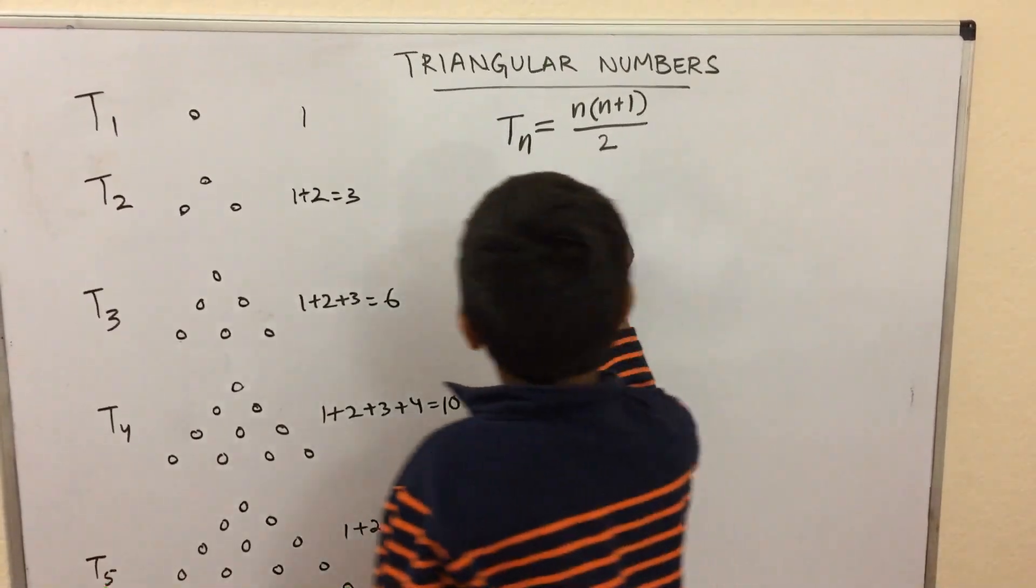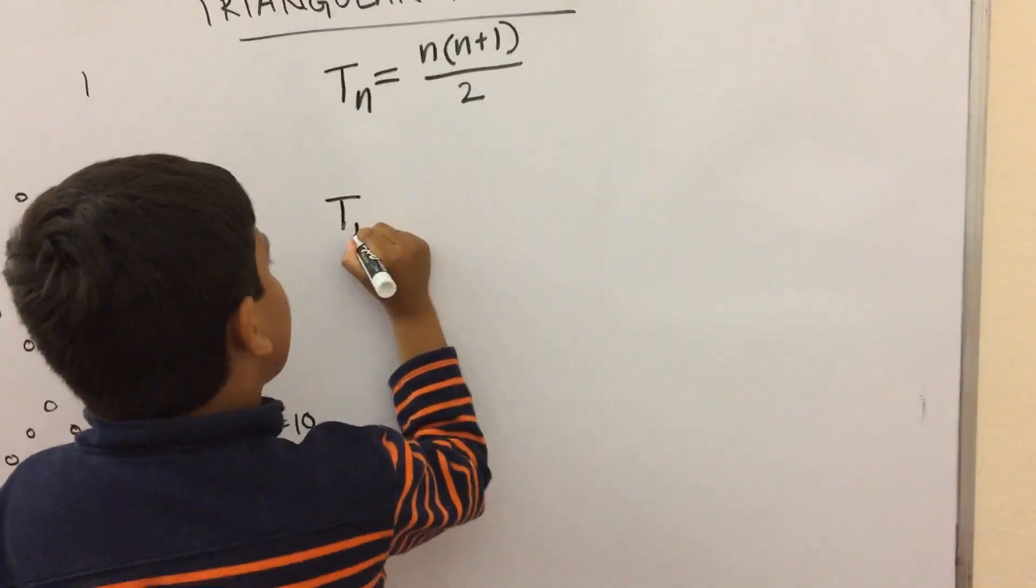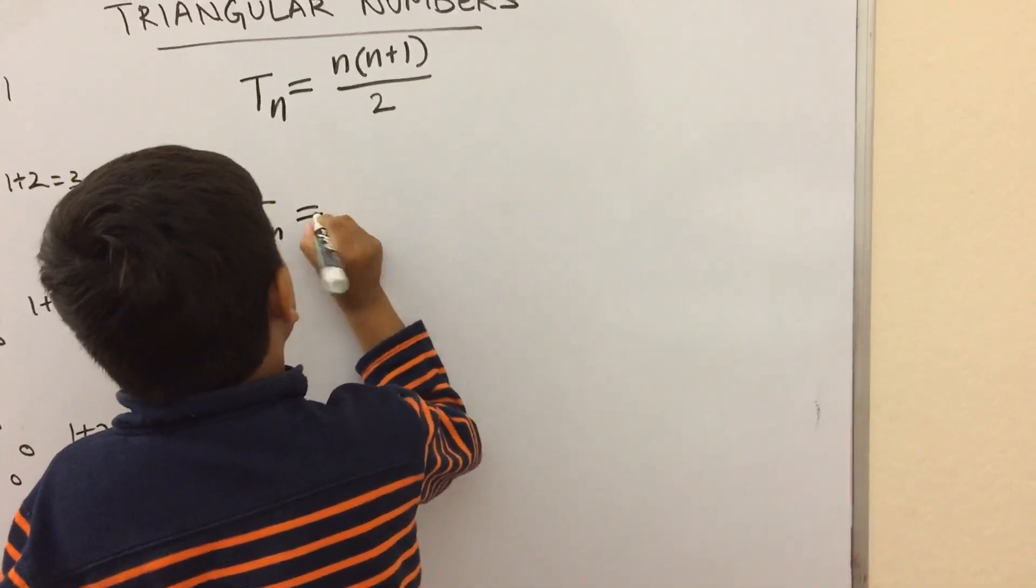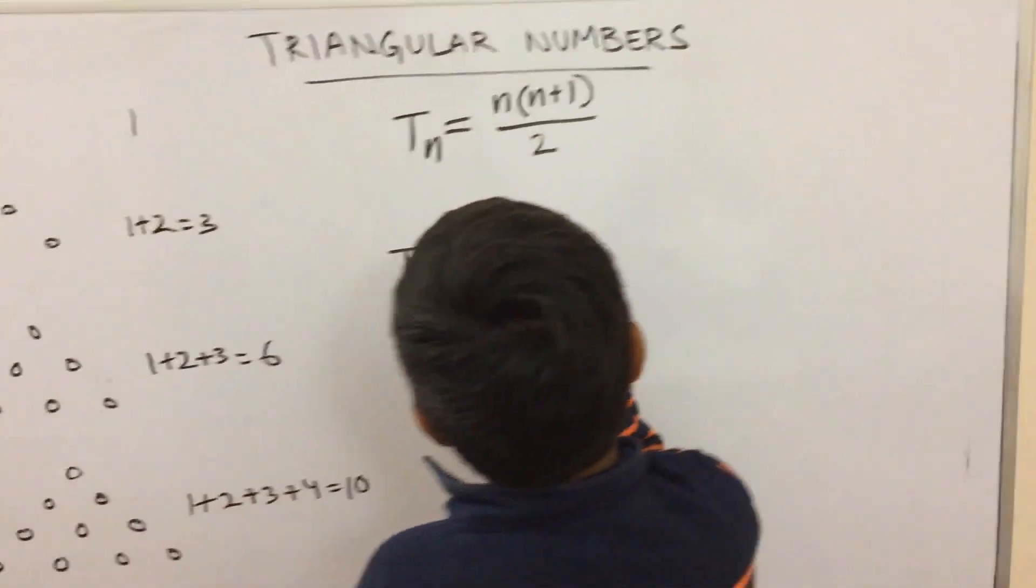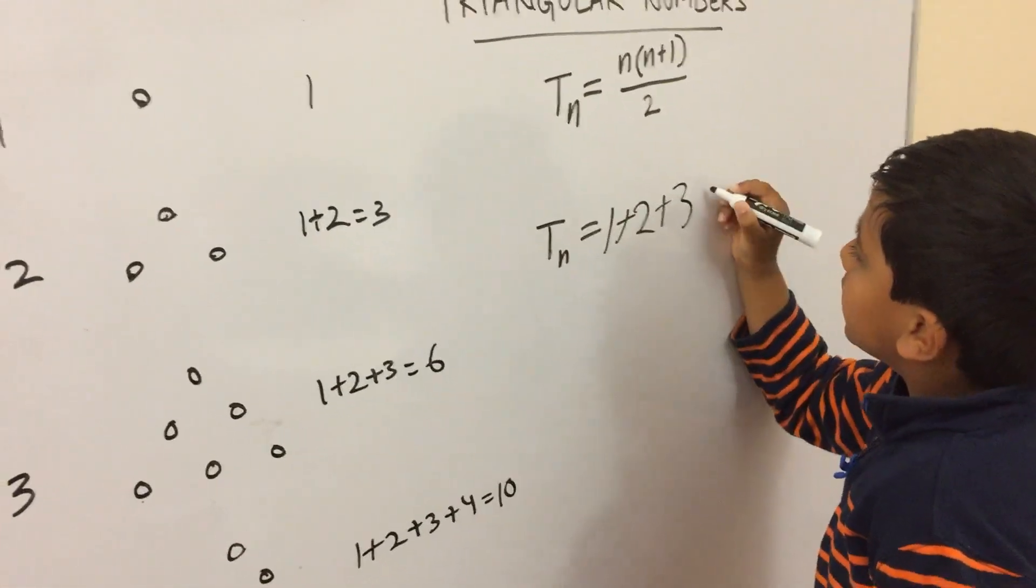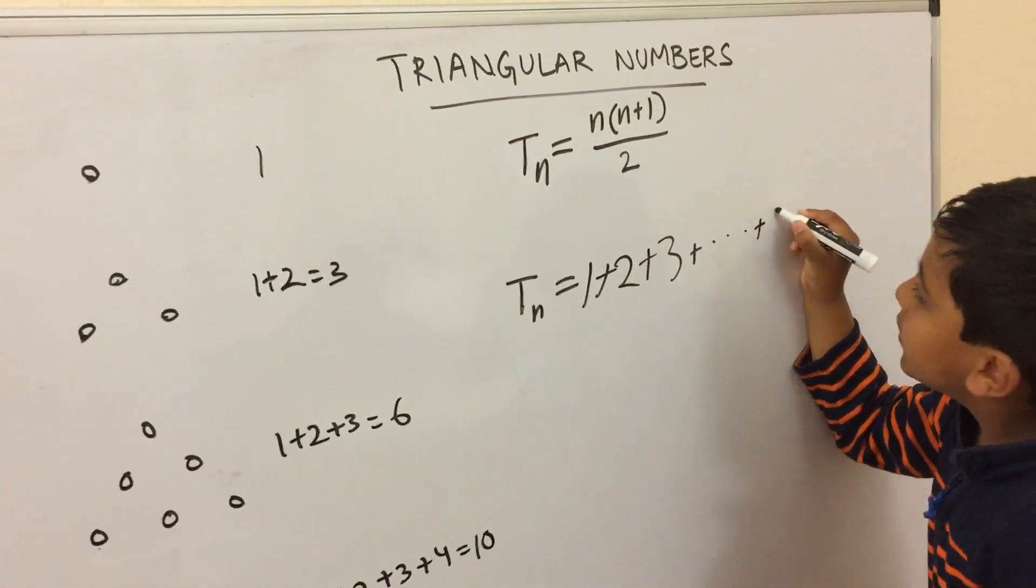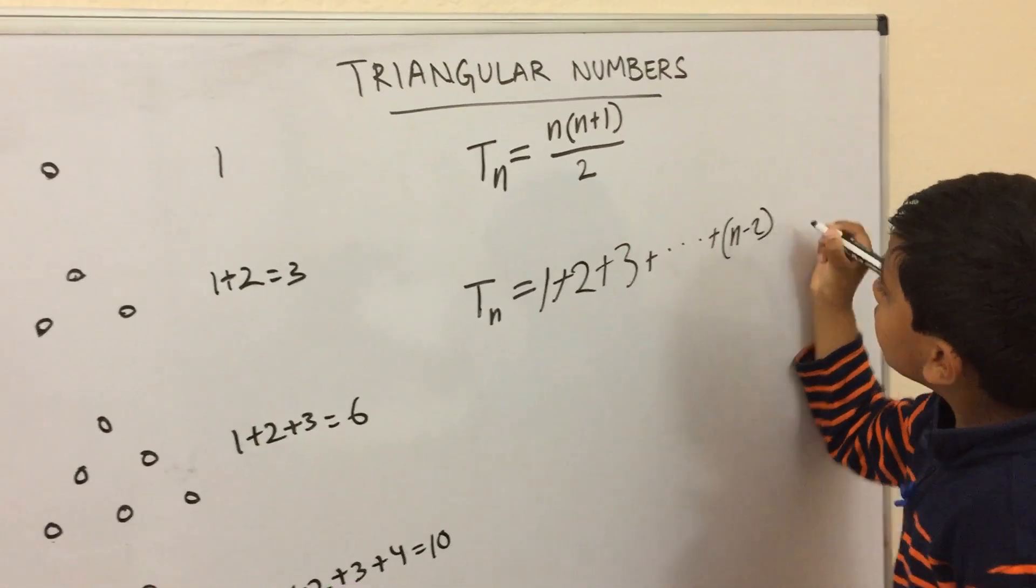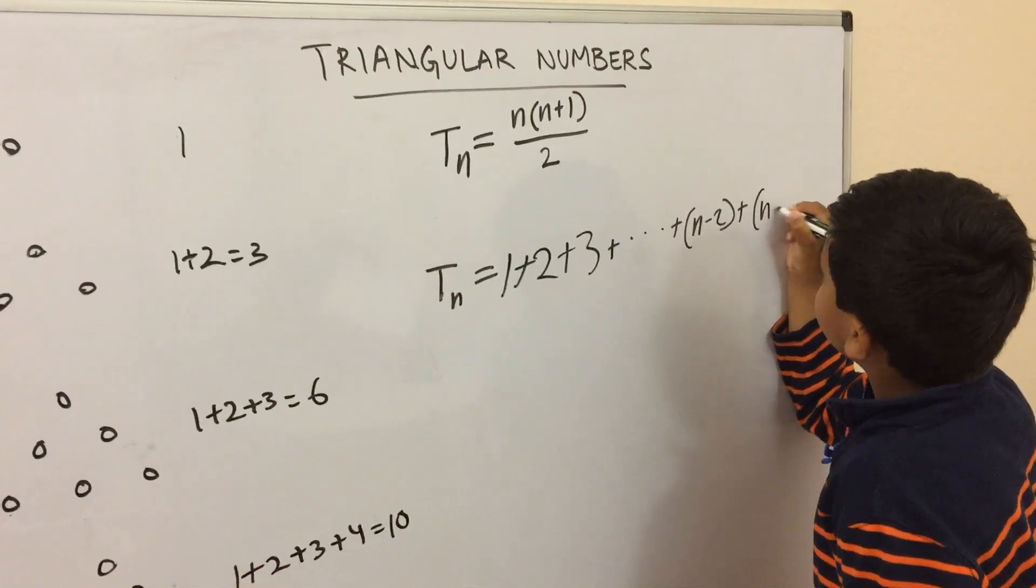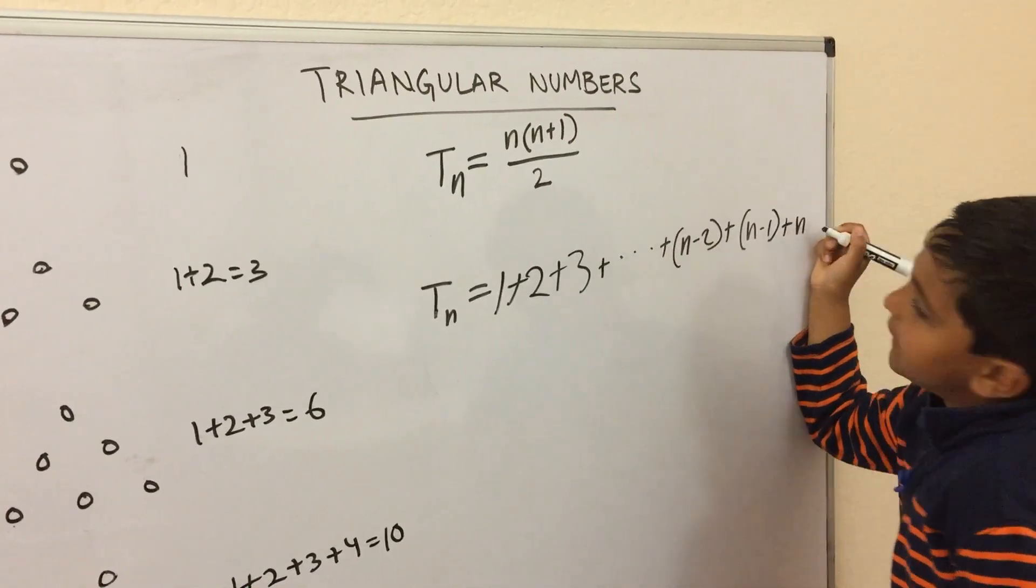Let's see how this works. So the triangular number is 1 plus 2 plus 3 plus all the way to plus n minus 2 plus n minus 1 plus n.